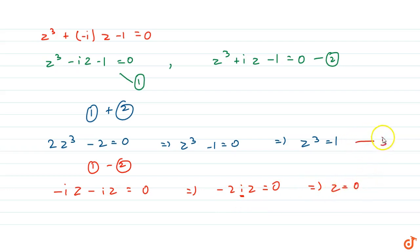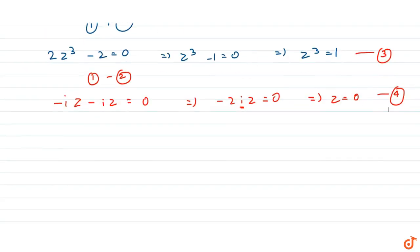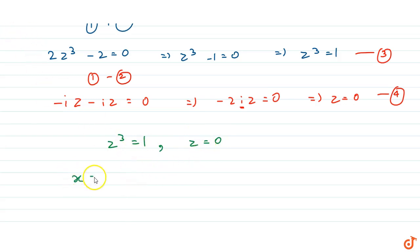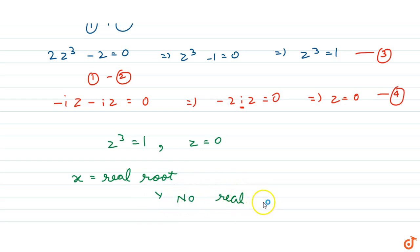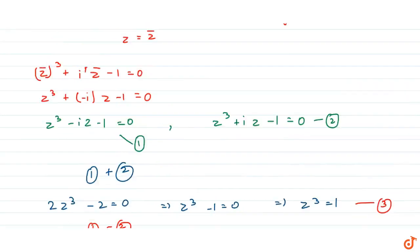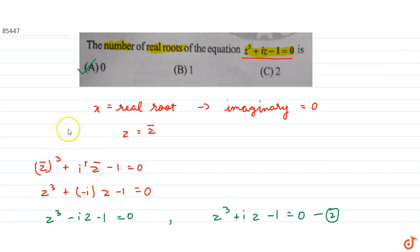From equation 3 we have z³ = 1, and from equation 4 we have z = 0. Both these conditions together cannot be simultaneously satisfied, so the assumption that x is a real root leads to a contradiction. Therefore the equation has no real root — that is, 0 real roots. Looking at the options, option A is the correct answer.